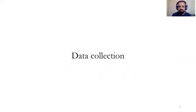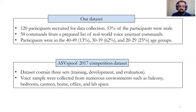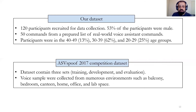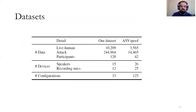Our data collection consists of two major datasets. One is collected by ourselves and the second is the ASVspoof 2017 competition dataset. Our dataset consists of 53% male participants, with a total of 120 participants divided into different age groups. For the ASVspoof dataset, which consists of training, development, and evaluation sets, we combine the training and development sets and train the SVM model for evaluation.